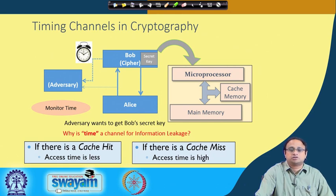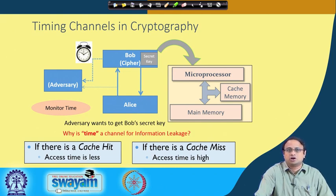From classical computer architecture, we know that a cache hit results in a smaller access time, whereas a cache miss results in larger access time because the main memory is much slower than cache. If the attacker can distinguish between a cache hit and a cache miss by measuring time accurately, this ability to understand whether an access resulted in a cache hit or miss can reduce the entropy of the secret key.